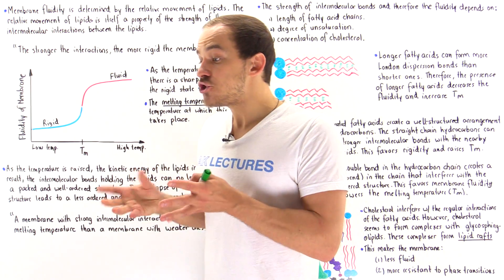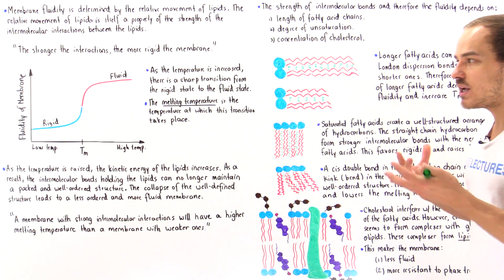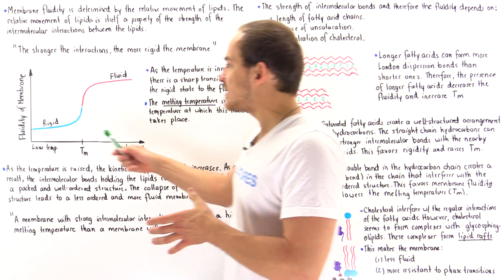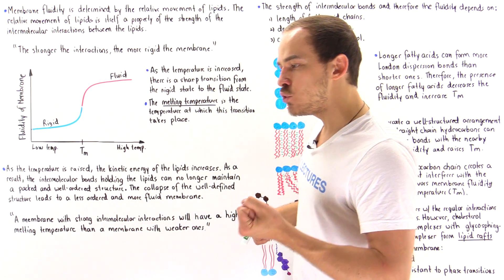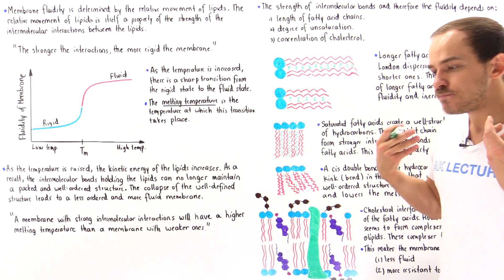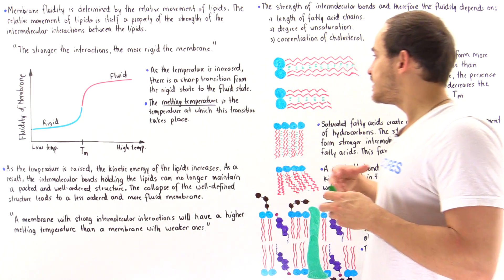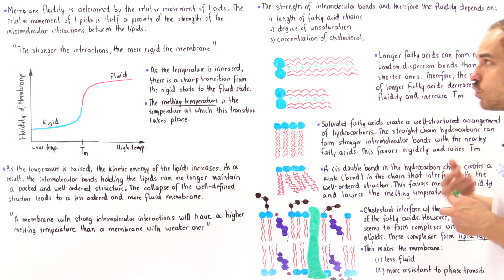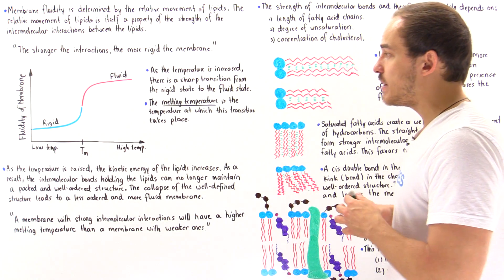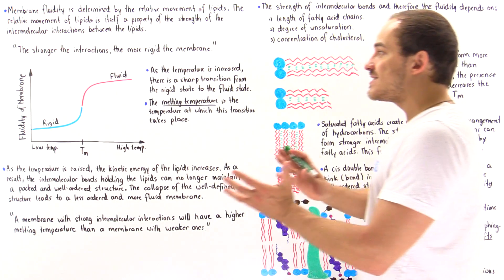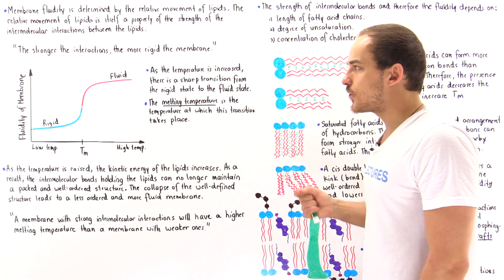When a change in temperature takes place, a membrane with cholesterol is less likely to transition between the rigid and fluid states. This is very important to maintaining homeostasis inside our cells. Cholesterol is used in animal cells to regulate both membrane fluidity and the transition between the rigid and fluid states.